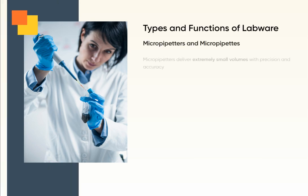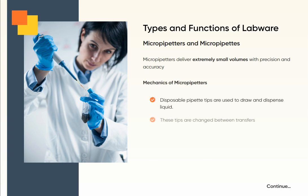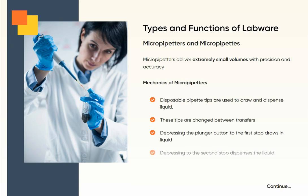Micropipettes deliver extremely small volumes with precision and accuracy. Disposable pipette tips are used to draw and dispense liquid, and these tips are changed between transfers. Pressing the plunger button to the first stop draws in liquid; pressing to the second stop dispenses the liquid.